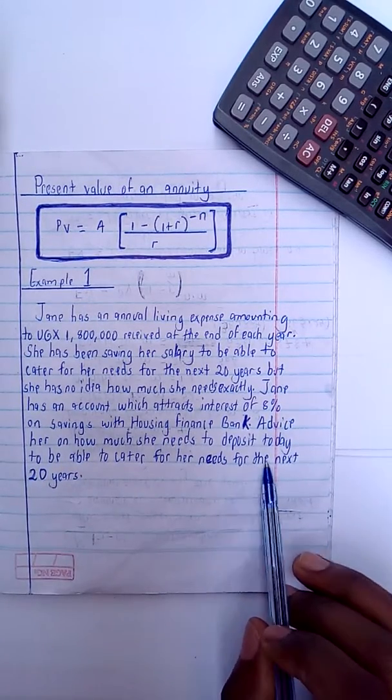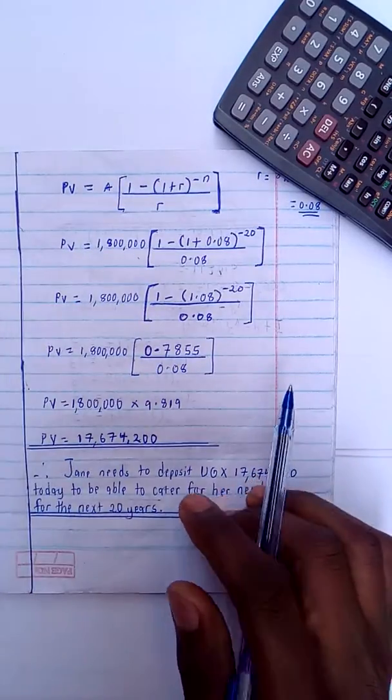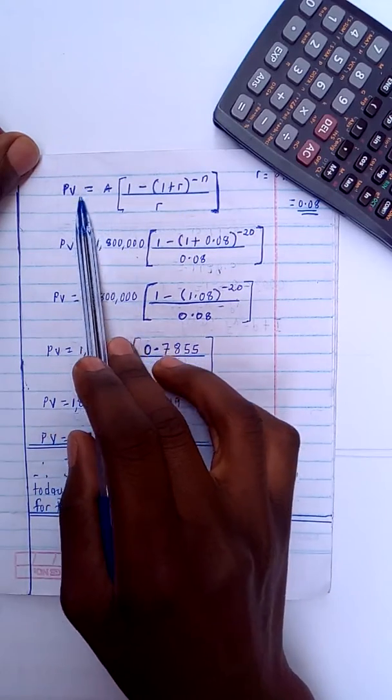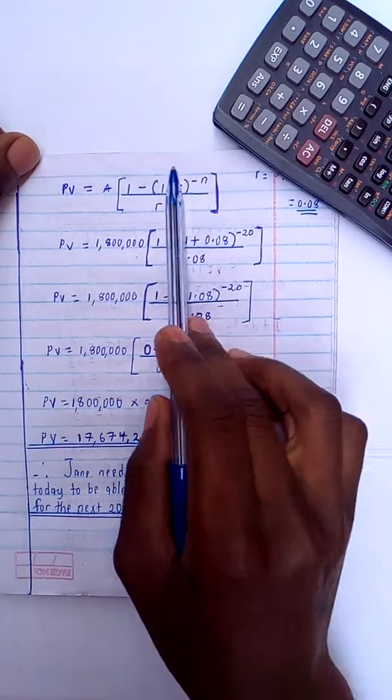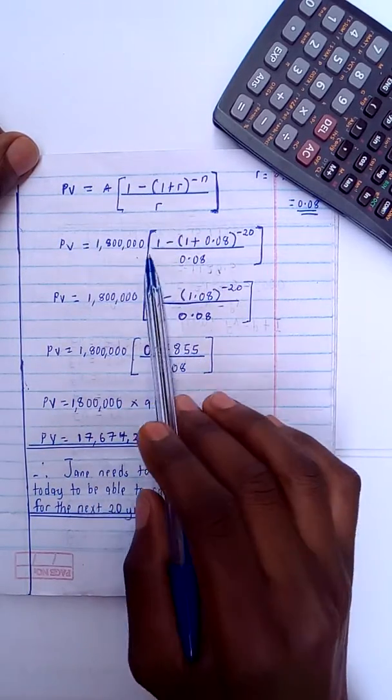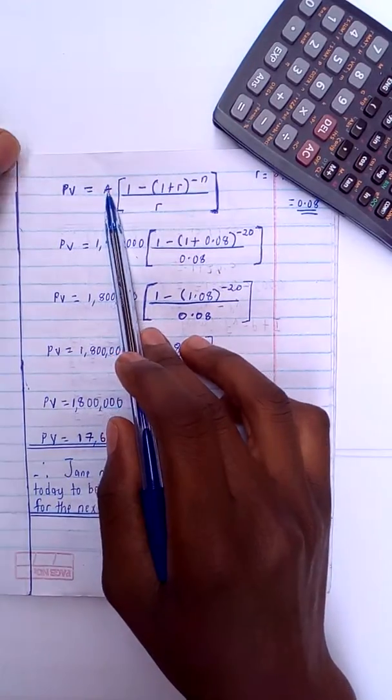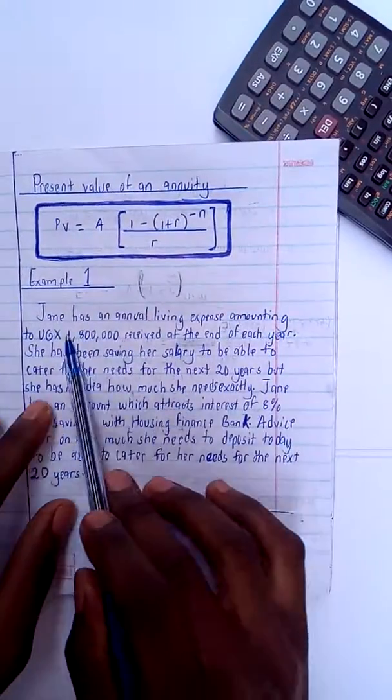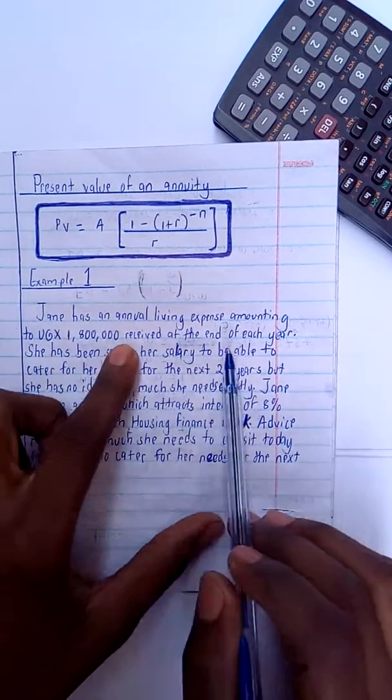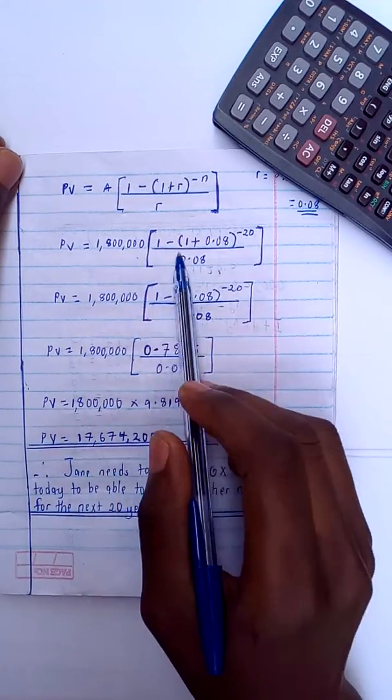With this, going into the solution, I'm going to start with my formula which is PV equals the annual installment, as I have written it down here. Then after that I extract out the vital information from the previous question, whereby I was having my annual installment as this, the annual living expense amounting to this. So this was my annual installment.